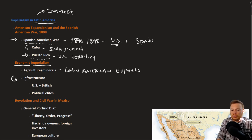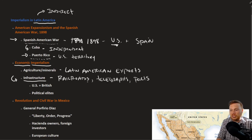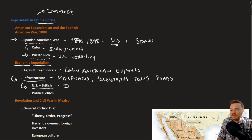In order to extract those resources, infrastructure was required — things like railroads to transport everything, telegraphs to communicate, ports for ships to dock, and roads. Most of the infrastructure in Latin America was not only technology brought from outside, but was also built by outside investors. The U.S. and the British in particular invested in and built much of Latin American infrastructure.